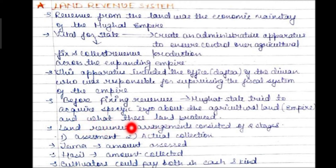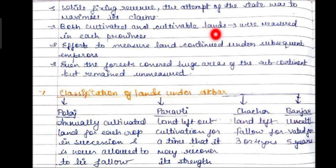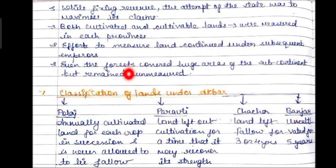While fixing revenues, the attempt of the state was to maximize its claim. Both cultivated and cultivable land were measured in each province. Certain types of surveys were performed to know about the cultivated land, the assessment, and how much revenue must be collected from that place. Efforts to measure land continued under subsequent emperors.